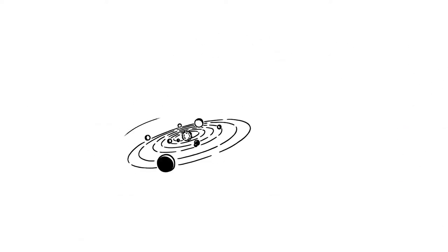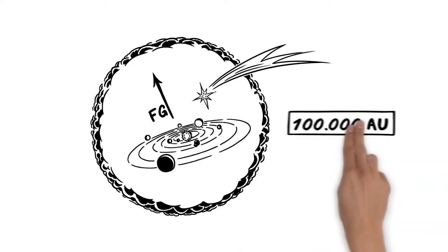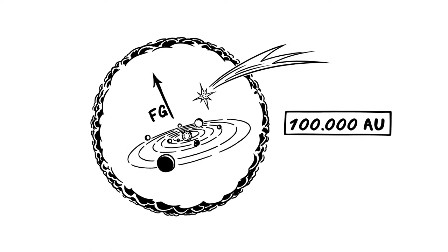But the solar system is much bigger. Its boundaries reach as far as the influence of the Sun's gravity. It extends to a place called the Oort cloud, where most of the comets are believed to come from, up to 100,000 astronomical units away.